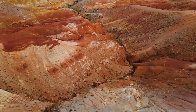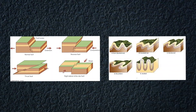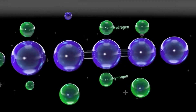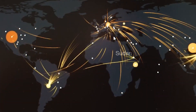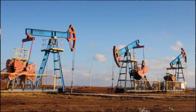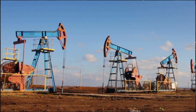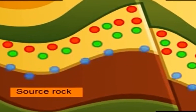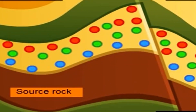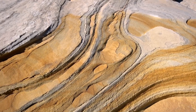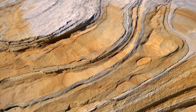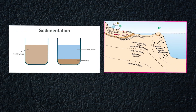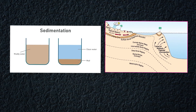Migration is also influenced by geological structures such as faults and folds, which can create ideal conditions for hydrocarbon accumulation. Understanding migration patterns is essential for locating and extracting oil and gas reserves. Reservoir rocks are a key component of oil and gas reserves. These rocks, typically sandstone or limestone, are porous and permeable, allowing them to store and transmit hydrocarbons.